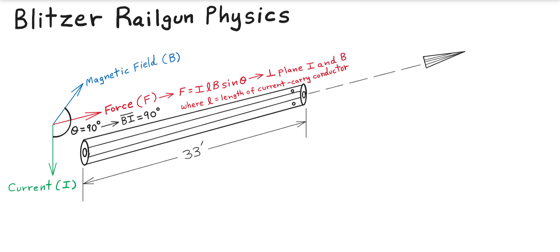We have approximately a 33-foot barrel pertinent to the Blitzer Railgun projectile launch distance, which then incurs our muzzle velocity. We're working with a standard electrical efficiency of an AC power source through the wires of 96%, and then the electromotive efficiency. The mechanical motion from the electro-to-magnetic conversion induces a rail motor — the linear version of an electric motor.